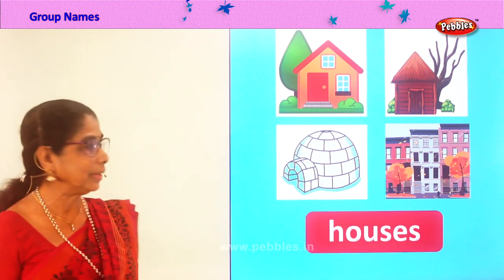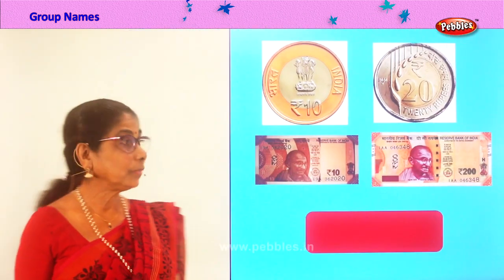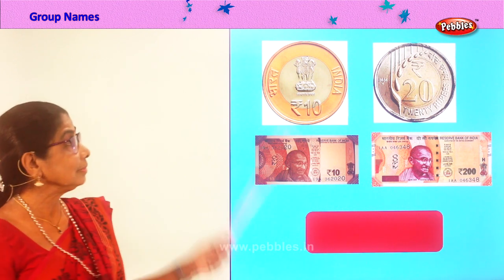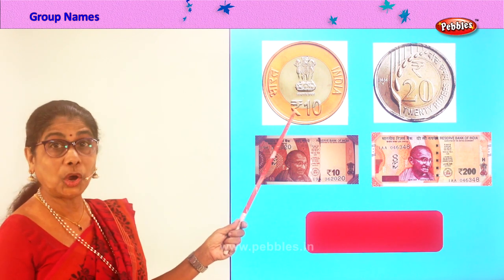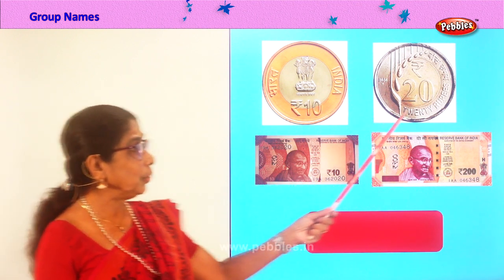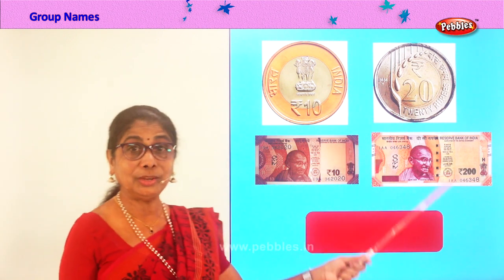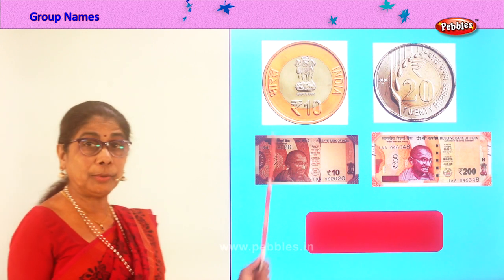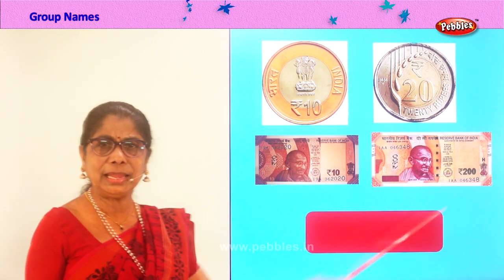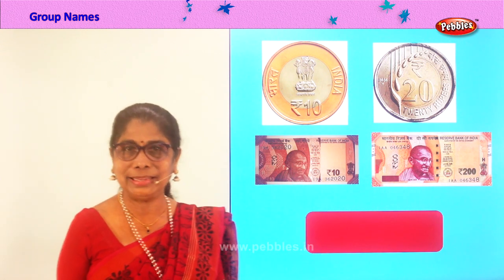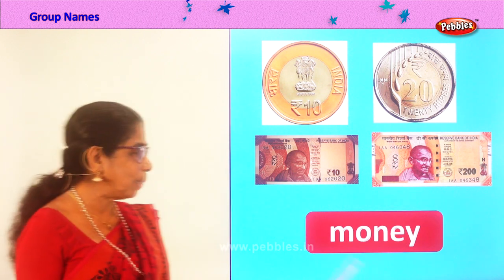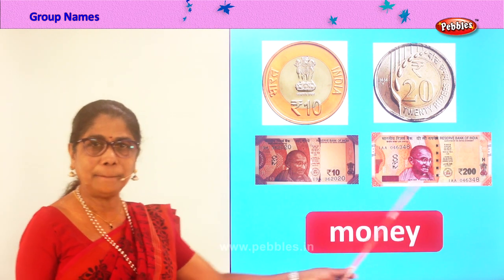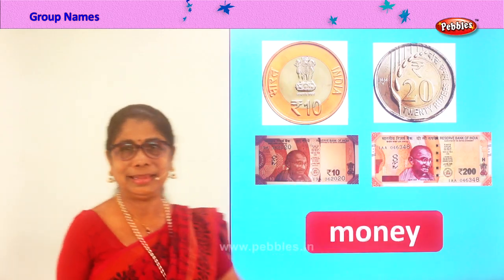Let's look at another group. What do you have here? A 10 rupee coin, 20 rupee coin, 200 rupee paper note, 10 rupee paper note. What is the name for this? Money! Spell money: M-O-N-E-Y. Paper money and coin money.